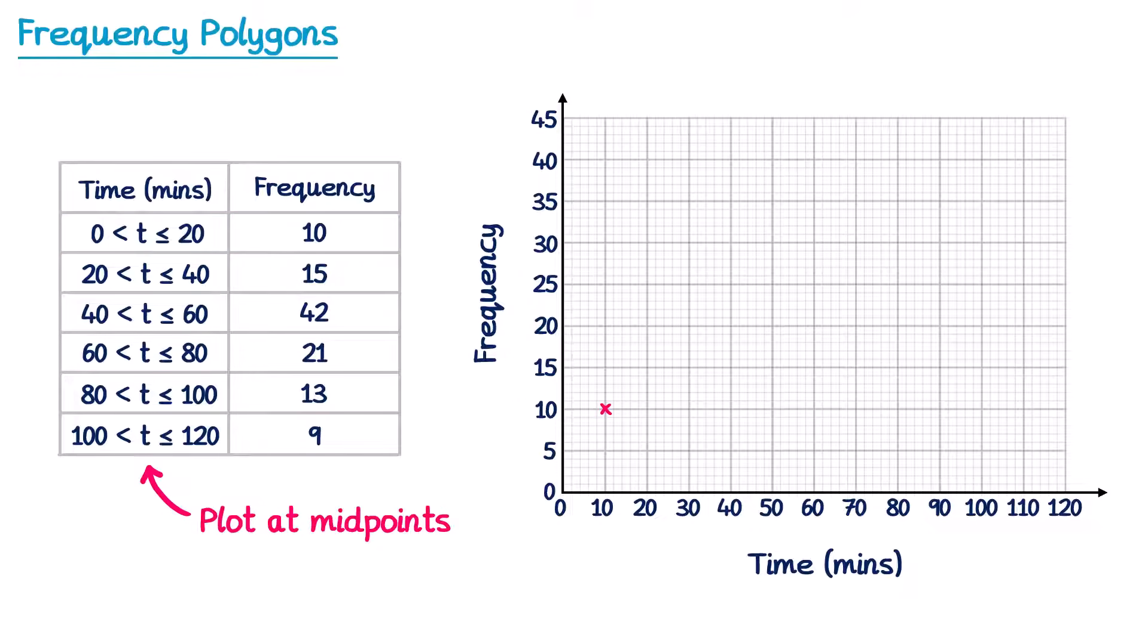We then continue this for all of the other intervals. So the next one goes from 20 to 40, the midpoint of that is 30, so we find 30 on the time axis, and the frequency for this one is 15. So we plot across at 30, 15.